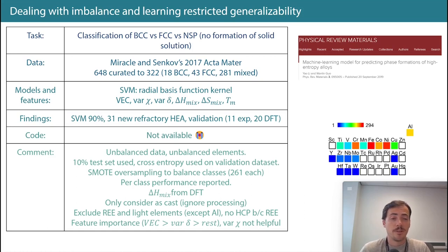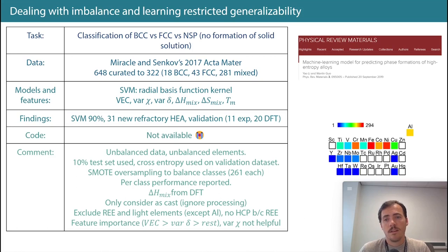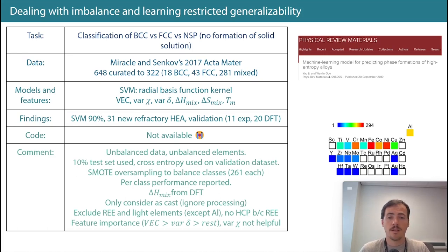My comments: again a quite unbalanced dataset. They at least had a test set — 10% of the data set aside as a true test set, supposedly. I can't verify since they didn't provide it, but they said they had that, and they did use cross-entropy.